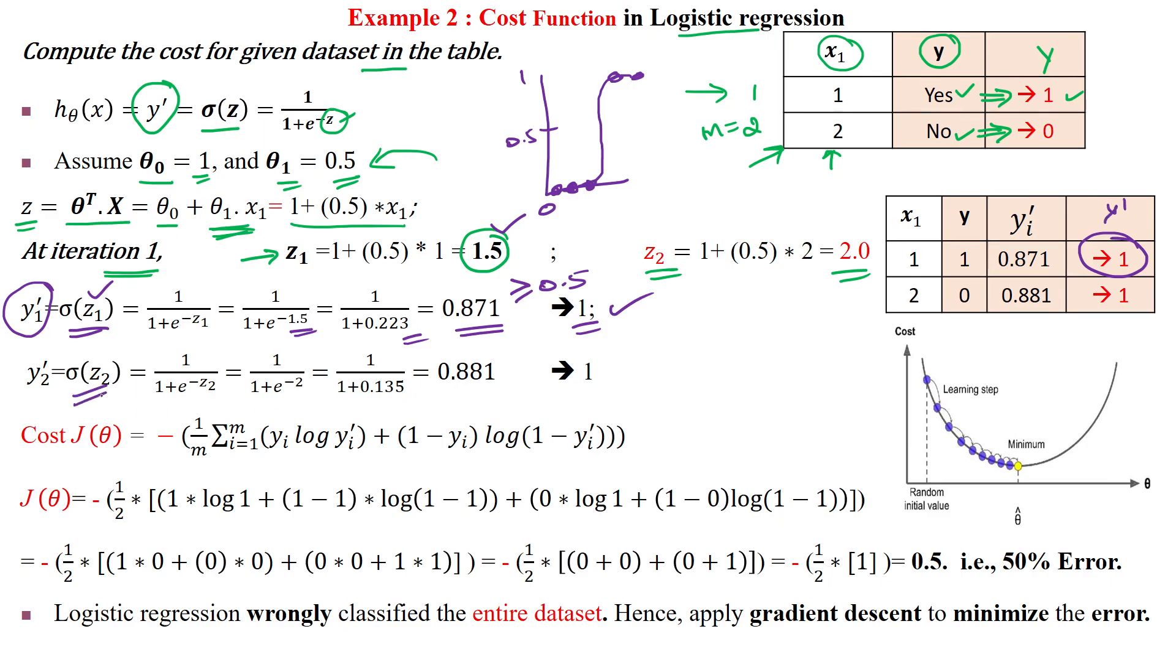For sample 2, applying the sigmoid function gives 0.881. The predicted value is 1, but the actual value is 0.